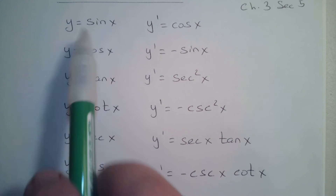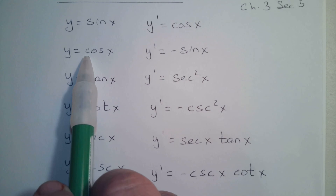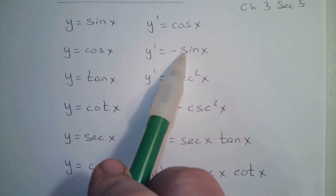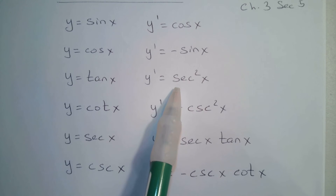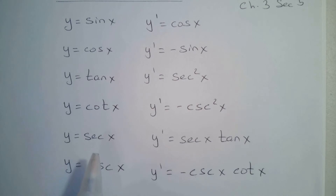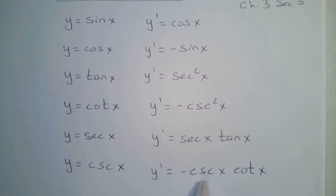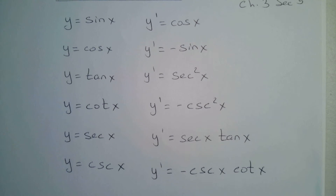The derivative of sine is cosine. Derivative of cosine is negative sine. Derivative of tangent is secant squared. Cotangent is negative cosecant squared. Secant is secant tangent. Cosecant is negative cosecant tangent. These are just shortcuts. If you want, I could make another video showing the full derivations — I just want to save some time.